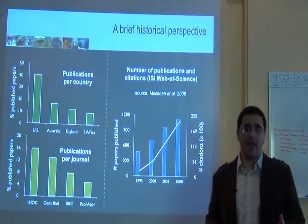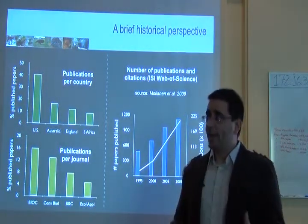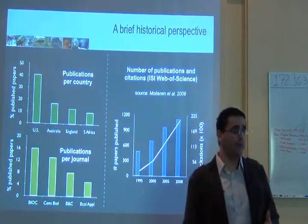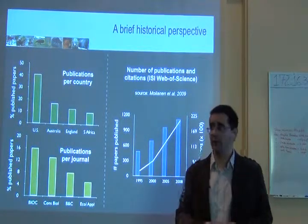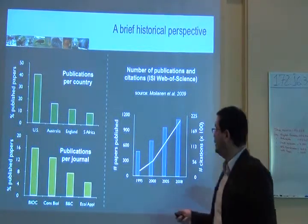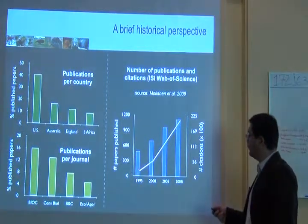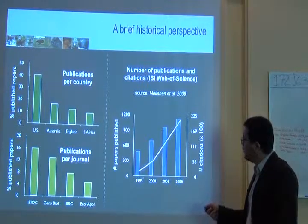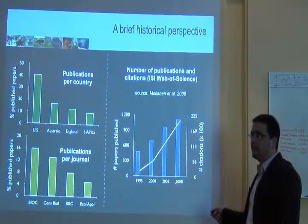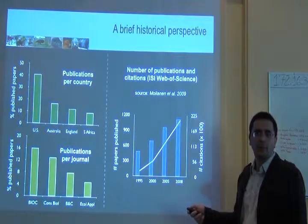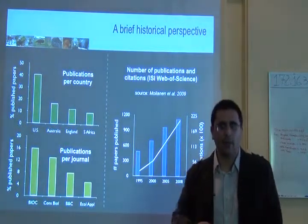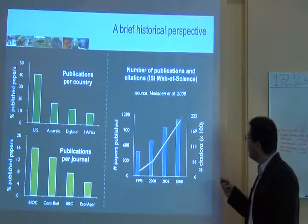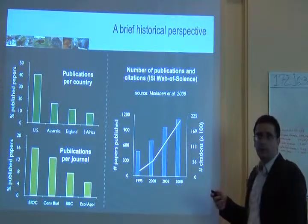Systematic conservation planning is a science with about 30 years of history since the 1980s, and it's growing fast. The number of papers published from 1995 to 2008, as shown in the book by Ate Moellani and colleagues, has been rising fast, as has the number of citations.